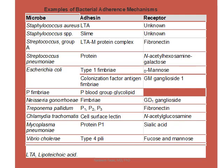Neisseria gonorrhoeae has pilus-like projections that bind to ganglioside GM1 receptors on vaginal epithelium. Treponema pallidum uses fibronectin adhesion molecules. Chlamydia trachomatis has a cell-surface lectin that binds to N-acetylglucosamine. Mycoplasma pneumoniae protein P1 binds to sialic acid. Vibrio cholerae uses type IV pili and binds to sugar molecules. Some adhesion receptors are well characterized and others are still under investigation.